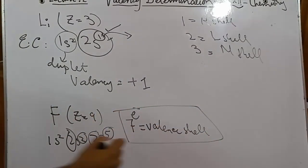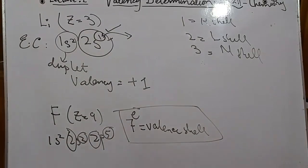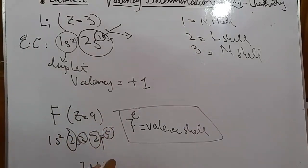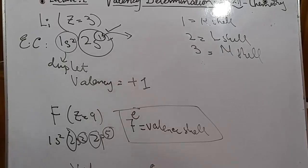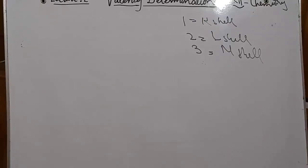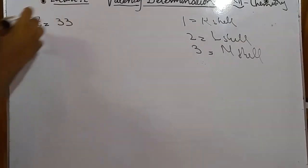It is easier for fluorine to gain an electron, as elements having five, six, or seven electrons in the outermost shell will always gain electrons. Fluorine needs one more electron to complete its octet: 7 + 1 = 8. So its valency is 1. However, remember the sign convention — when an atom gains an electron it becomes negatively charged, so the valency of fluorine is −1.